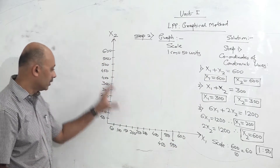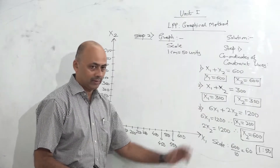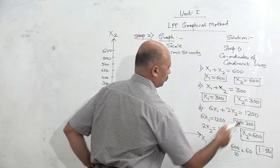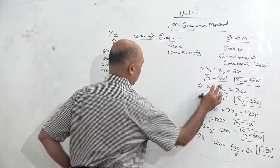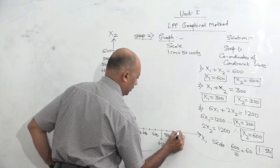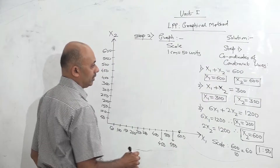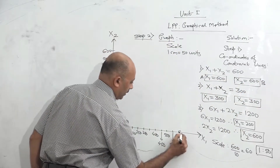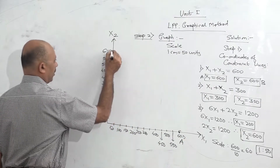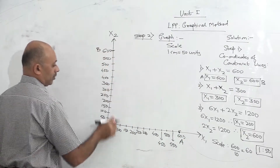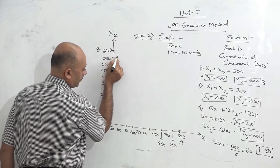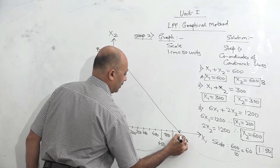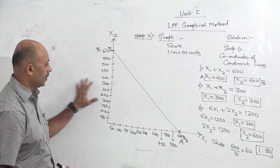Now we start drawing the lines. The first constraint line is x1 plus x2 less than or equal to 600. The coordinates are x1 equals 600 and x2 equals 600. Name these points A and B respectively — point A where x1 equals 600, and point B where x2 equals 600. Join them with a straight line. This is the first constraint line.